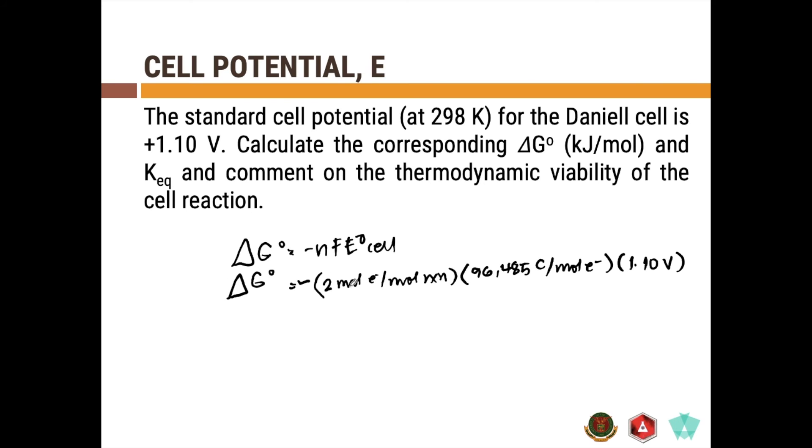So the 2 mole electrons per mole reaction here is derived from the reaction of copper 2 plus forming copper and then you have zinc forming zinc 2 plus. Those are the half reactions of the Daniell cell. So you need to consider the standard reduction potential of those two reactions and you will come up with 1.1 volts and the number of electrons that are gained and lost in those two reactions is equal to 2.